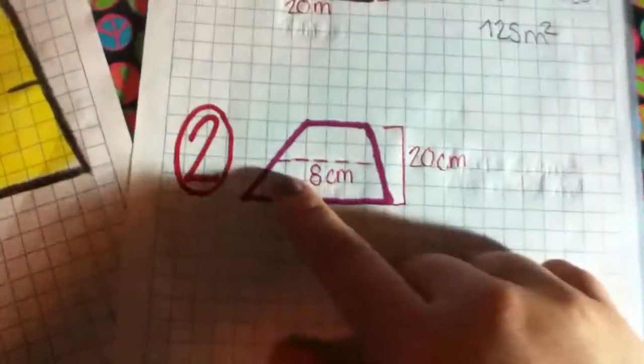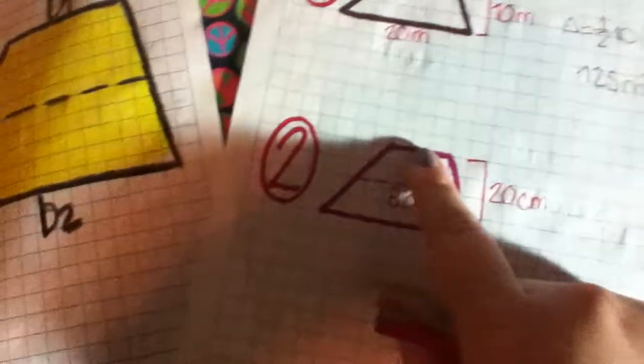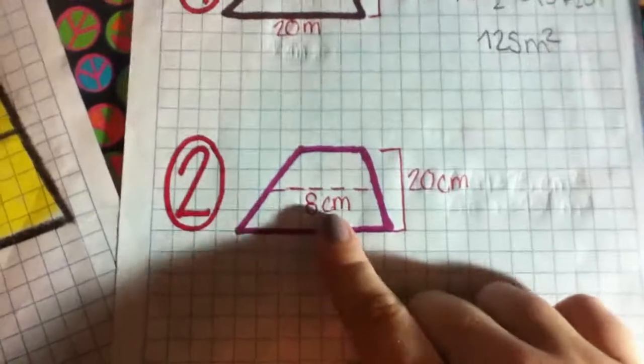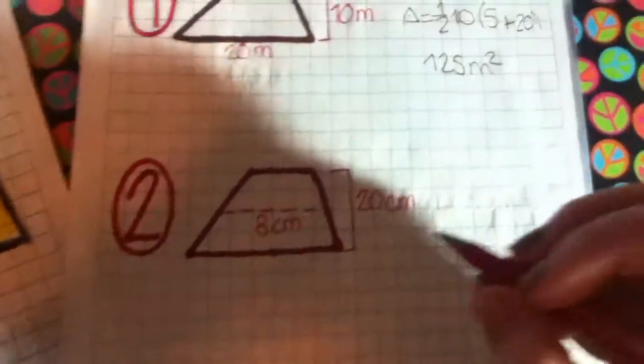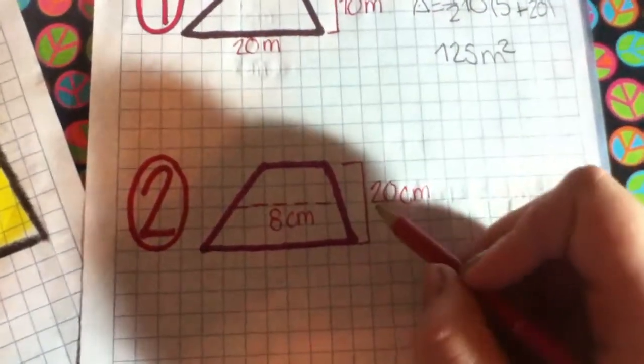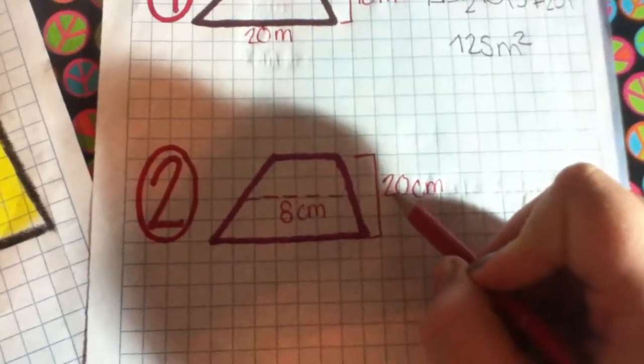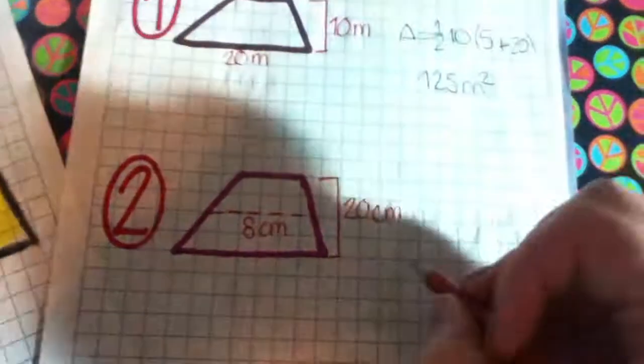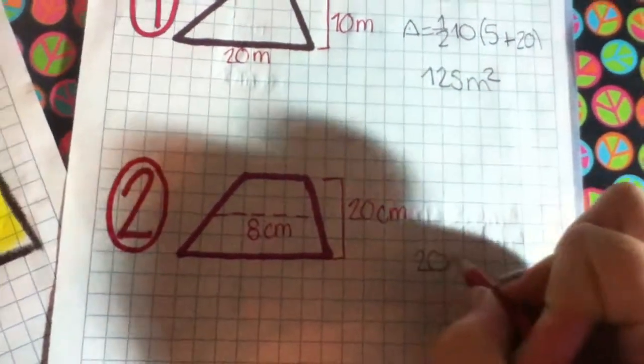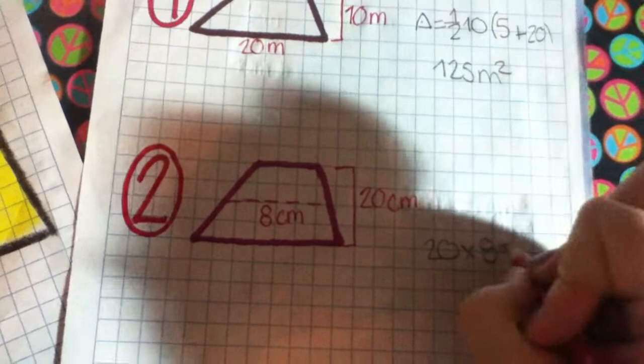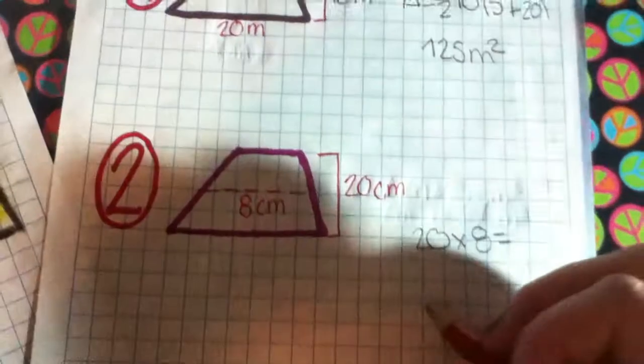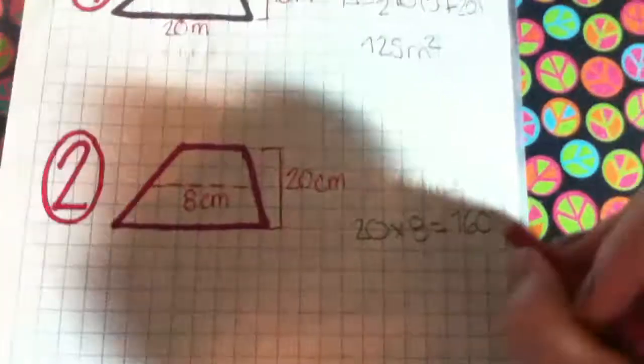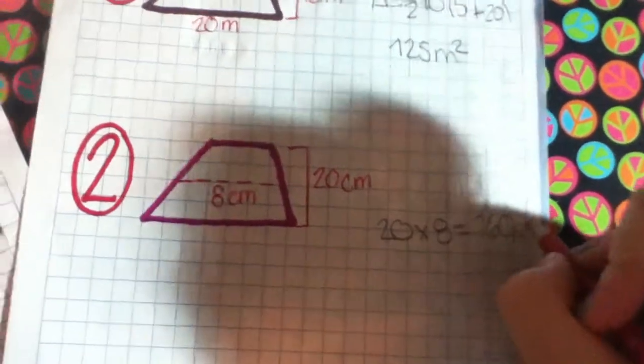Now we don't have bases, but we have a mid segment. For this, you need to do the height times the mid segment. 20 times 8. The answer is 160 meters squared.